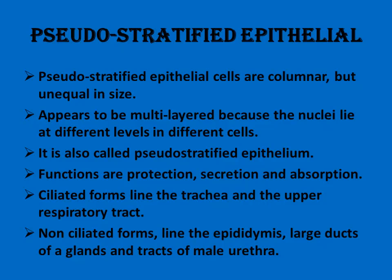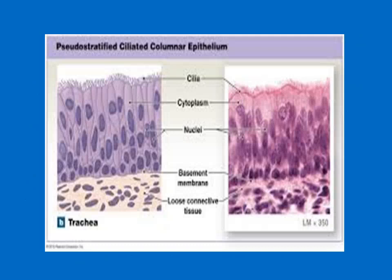So pseudo-stratified epithelium is classified as columnar, with different nuclei present at different levels. The functions are protection, absorption, and secretion. There are two forms: ciliated, located in the trachea and upper respiratory tract; and non-ciliated, located in the epididymis, larger ducts of glands, and tracts of the male urethra. This is called pseudo-stratified ciliated columnar epithelium, and both ciliated and non-ciliated forms are shown in the picture.